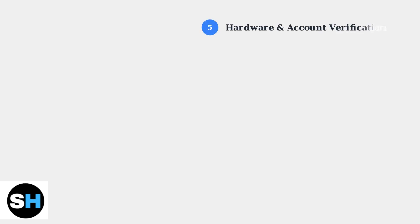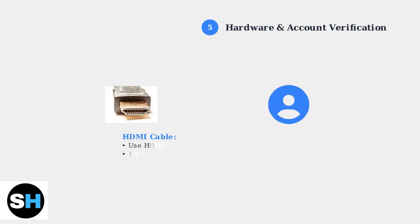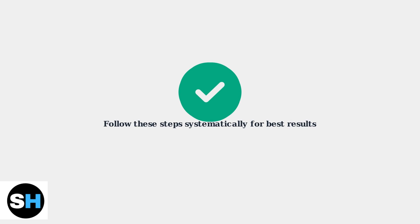Finally, verify your HDMI cable compatibility and check your Amazon account usage. Streaming on too many devices simultaneously or using an incompatible HDMI cable can trigger error codes. These troubleshooting steps resolve Error 0.60 in most cases.